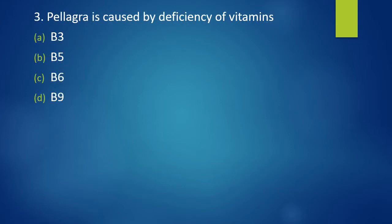Question 3. Pellagra is caused by deficiency of vitamin B3, vitamin B5, vitamin B6 or vitamin B9. Correct answer is pellagra is caused by deficiency of vitamin B3 and what is the name of vitamin B3? Right, niacin. Guys remember the names of vitamins and the deficiencies are important. They are often asked in NEET.